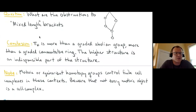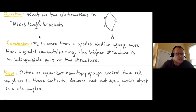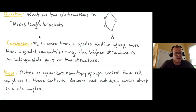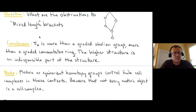Everything so far was background motivation about classical stable homotopy theory. Much of this same story applies in motivic or equivariant contexts — the motivic and equivariant stable homotopy groups control finite cell complex constructions there as well. However, in the motivic context, not every motivic object is built out of cells, so these stable homotopy groups are good for cellular objects but not necessarily for others. The good news is that many important motivic objects — like algebraic K-theory spectra, Eilenberg–MacLane spectra, and cobordism spectra — are cellular.